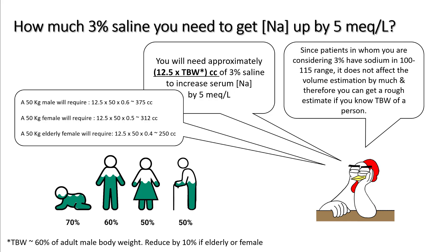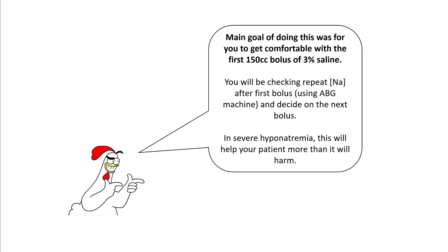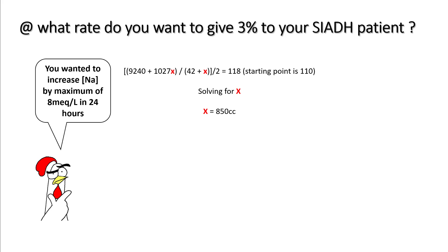In adult males, 60% of body weight is total body water; in females it's 50%; and in elderly it's also 50%. Hopefully after these calculations you'll feel more comfortable giving that 150 cc bolus of 3% saline to your severely hyponatremic patient. You will be checking the repeat sodium after the first bolus before deciding on the next bolus — in severe hyponatremia, this will help your patient more than harm.